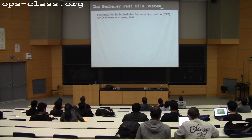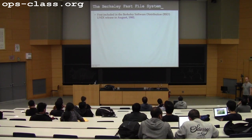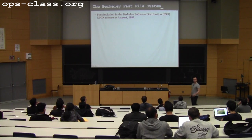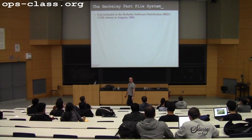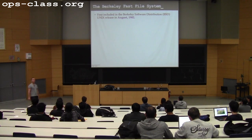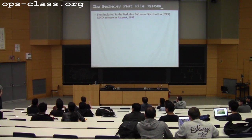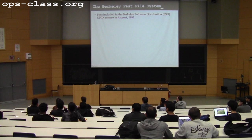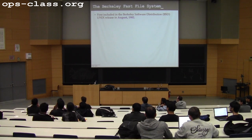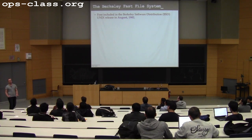The Berkeley Fast File System was first released in 1982 as part of one of Berkeley's standard Unix distributions. Berkeley was one of the schools involved in early Unix, and they released a distribution still quite popular called BSD. BSD people are kind of their own breed — they don't mix very well with Linux people. There's a lot of hate in the BSD community about Linux, some of it slightly irrational.